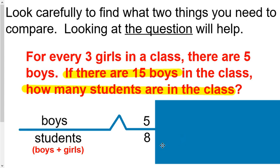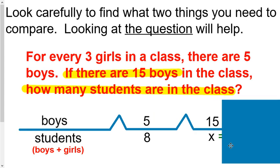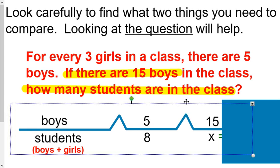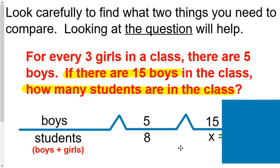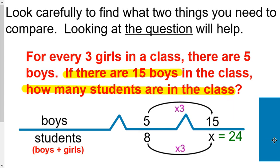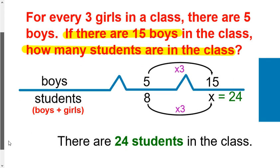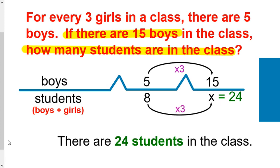When I set up the rest of this, the question says if there are 15 boys in the class, how many students are there? Notice sometimes my variable could be on the bottom, and that's totally okay too. When I look at this, it's really pretty simple to solve because I can just multiply by a scale factor here. 5 times 3 gives me 15, so multiply by 3 on the bottom as well. 8 times 3 is 24. So I've determined there are 24 students in the class.